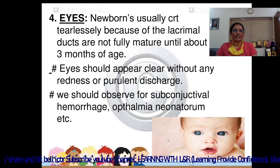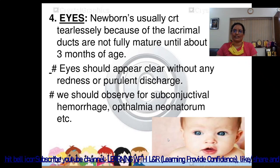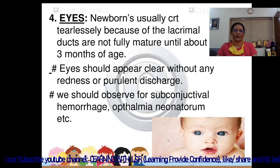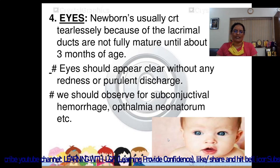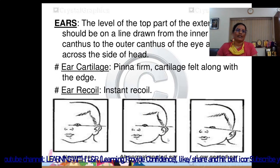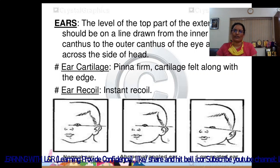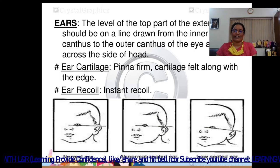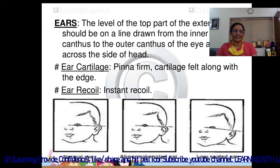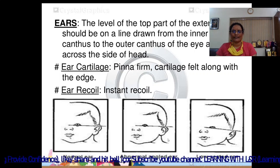Eyes: newborns usually cry tearlessly because the lacrimal ducts are not fully mature until about 3 months of age. Eyes should appear clear without any redness or purulent discharge. Observe for subconjunctival hemorrhage and ophthalmia neonatorum. Ears: the level of the top part of the external ear should be on a line drawn from the inner canthus to the outer canthus of the eye and back across the side of the head. In the image, you can clearly see the normal ear versus the abnormal angled low-set ear. Ear cartilage should have instant recoil when released.